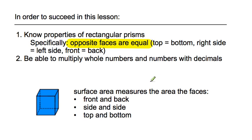The second thing you're going to have to know is how to multiply whole numbers and numbers with decimals. Just remember that surface area measures the area of all of the faces — front and back, side and side, and top and bottom. These are pairs because they are equal to each other, and that's another key component to this lesson. Keep that in mind as we move forward.